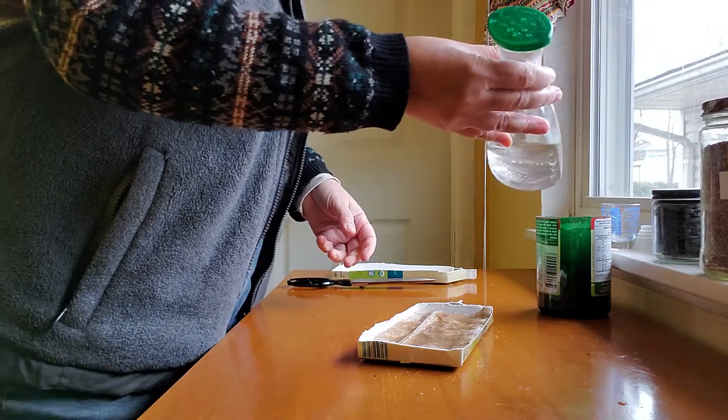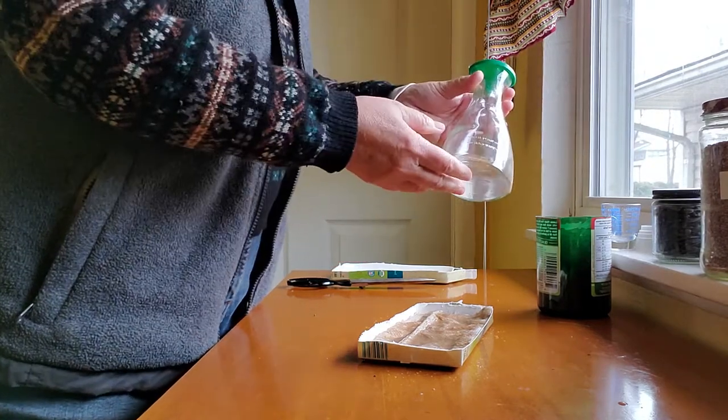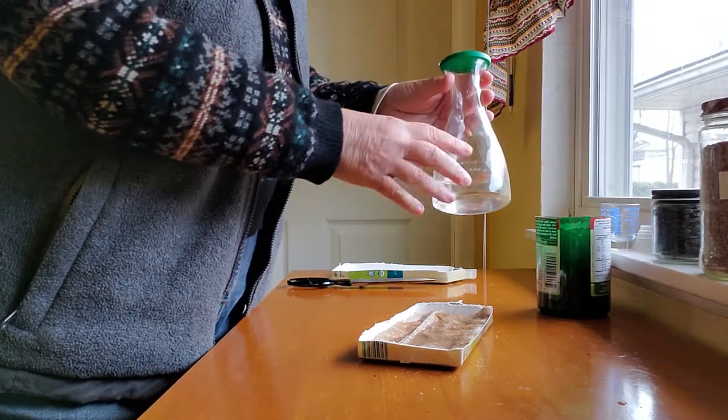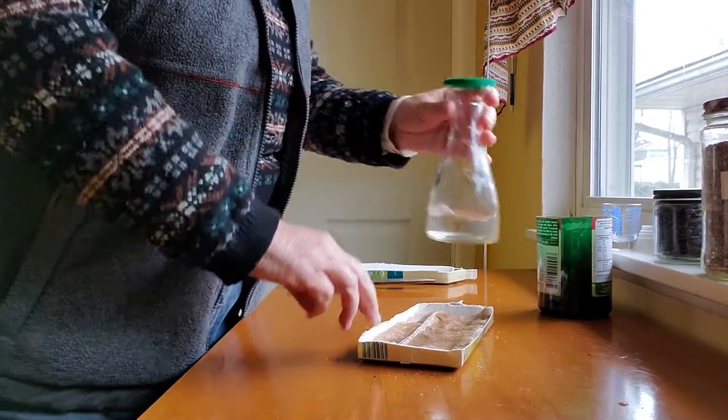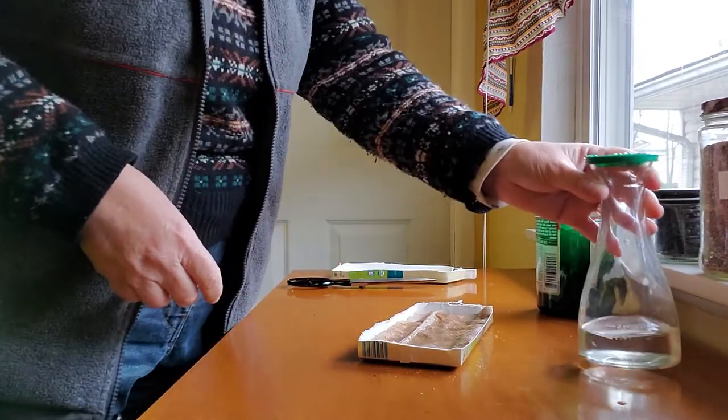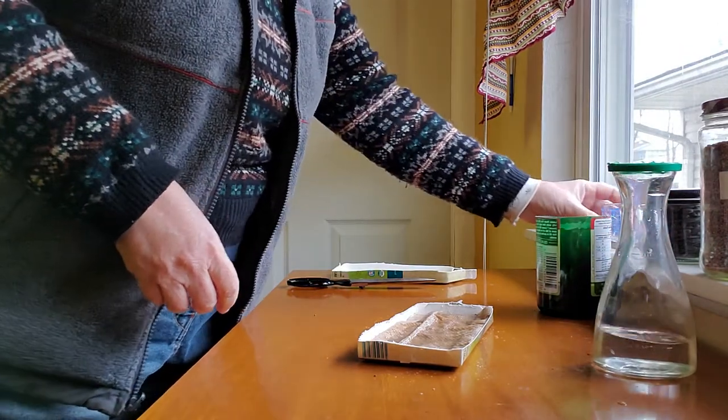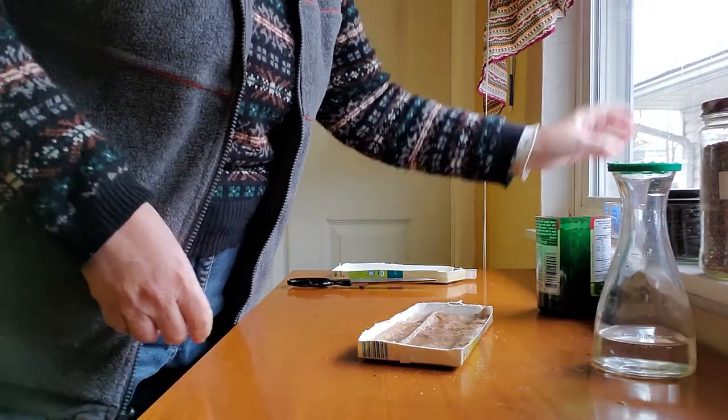This is just a salad dressing bottle, and I poked holes in the top. It makes a nice sprinkler rather than a spray gun. And then I have a number of kinds of seeds.